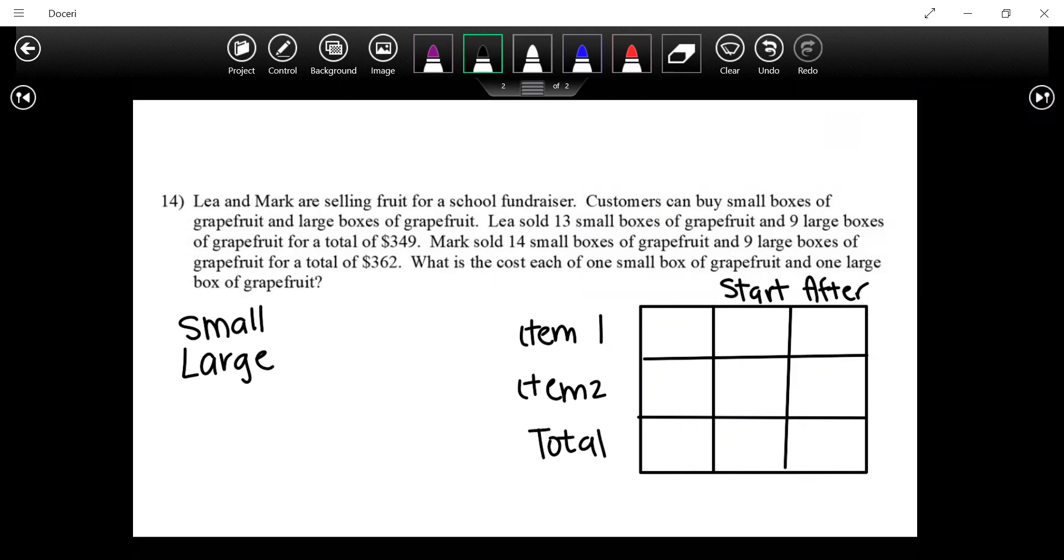I'm going to let S be my small, L be my large. That's what I want to put in for item one and item two so I know I can separate them. Now at the start of one of them, or at least for one of them, we can either say Leah and Mark for start and after. We can do this. 13S and 9 large. How much did they total out to? 349.